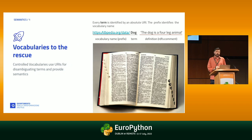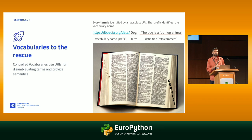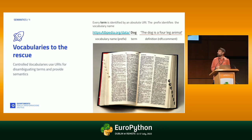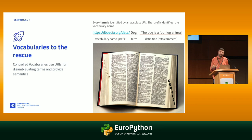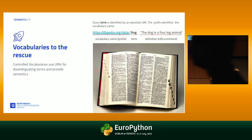The solution is controlled vocabularies. Controlled vocabularies are a computer science tool that uses URIs to disambiguate terms. The first part of the URI is the name of the vocabulary — for example, this is the DBpedia vocabulary. Then there is the term, in this case 'dog'. And then there is a definition. The RDFS comment is the common field name in vocabularies for a definition that is written in human-readable language.